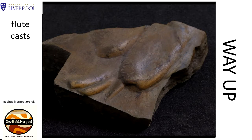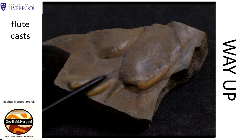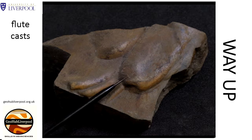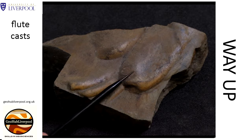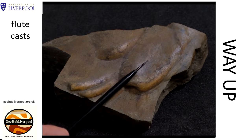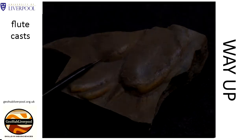The general direction of the turbidity current can be worked out because the scoop-shaped end of each flute points upstream. This means the current direction was in the direction indicated by the pointer.